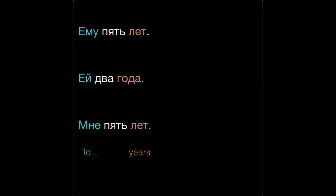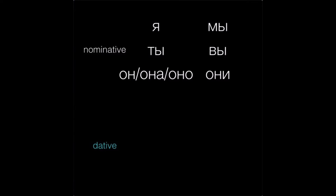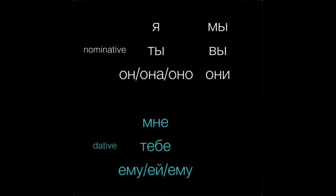So, ему, ей, тебе, and мне are personal pronouns in the dative case. Here's the complete set next to the nominative forms for comparison: мне (to me), тебе (to you, informal singular), ему, ей, ему — note that the masculine and neuter pronouns are the same. нам (to us), вам (to you, plural or formal), and им (to them).